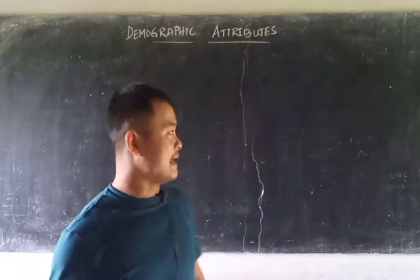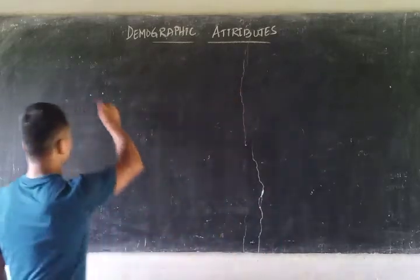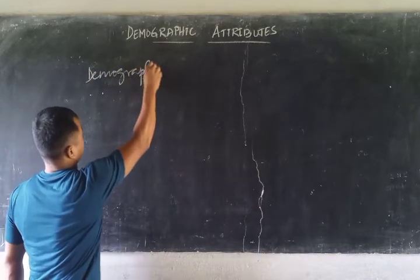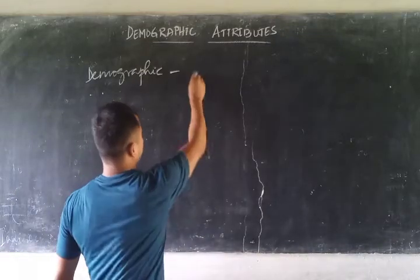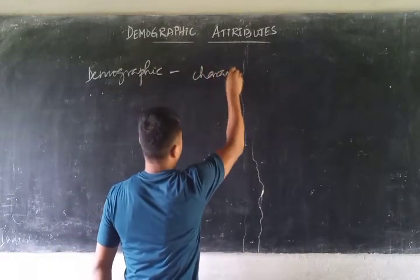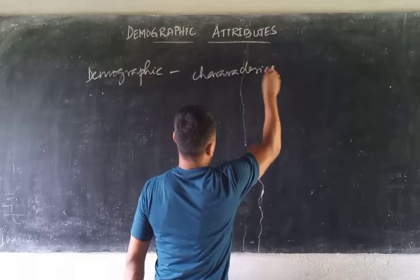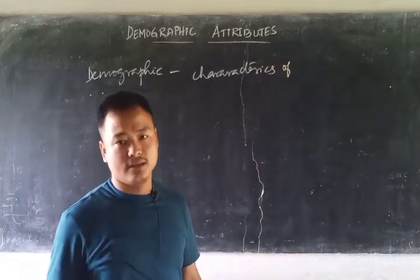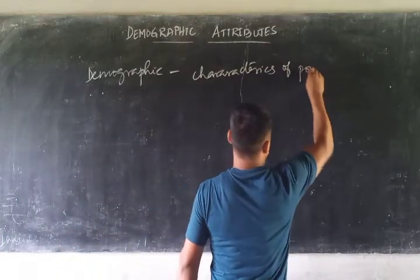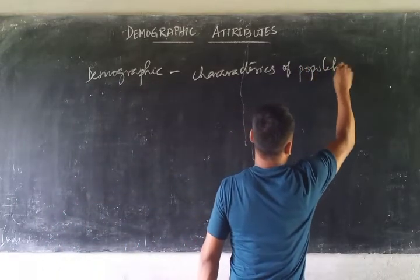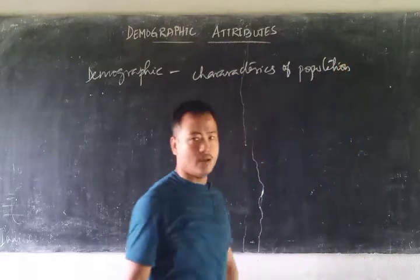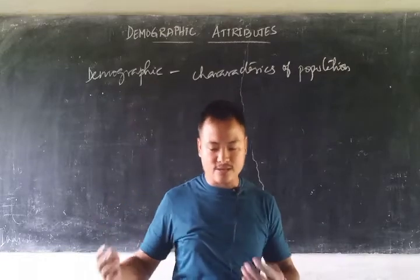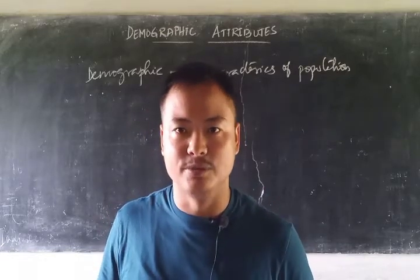This demographic attribute of population — or simply demographic attribute — refers to the characteristics of the population of a particular place: what a population is composed of, what are the main economic activities, and what are the ways of living. These all make up the demographic attributes.